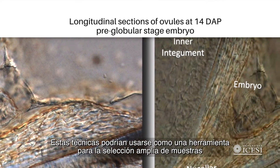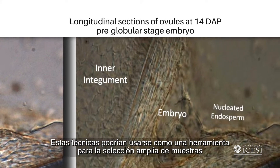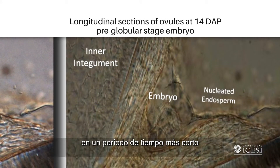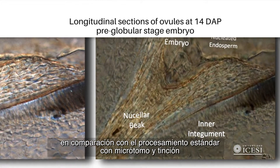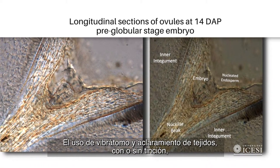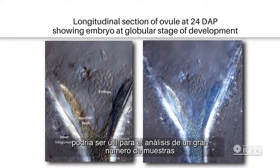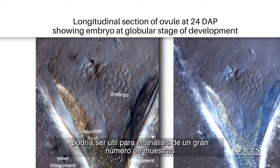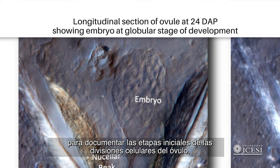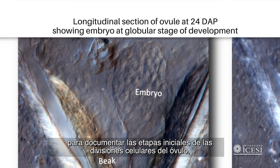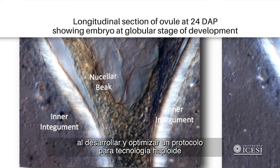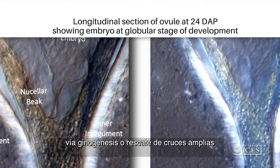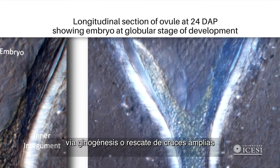These techniques could be used as a tool for broad screening of samples in a shorter period of time compared to standard processing with microtome and staining. The use of vibratome and tissue clearing, in combination with or without staining, may be useful for analysis of large numbers of samples to document the initial stages of cell divisions from the egg cell and to monitor embryo formation when developing and optimizing a protocol for haploid technology via gynogenesis or rescue from distant crosses.